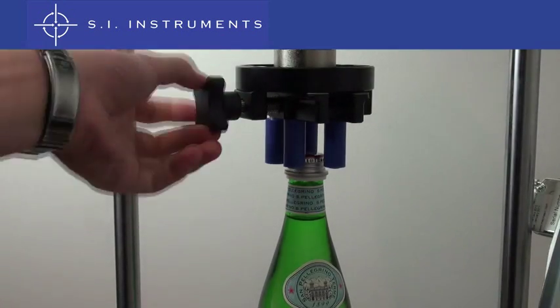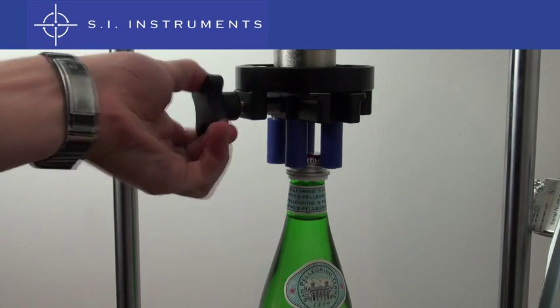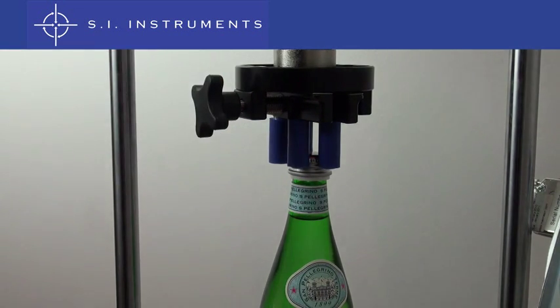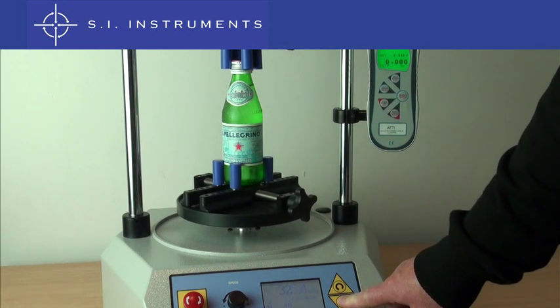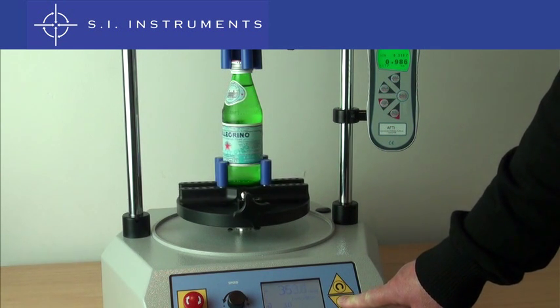In this example, we are testing the cap torque of a soft drink bottle. First we clamp the bottle into the bottle holder plate, then the centre bar is lowered, the pegs are tightened and we are ready for action.